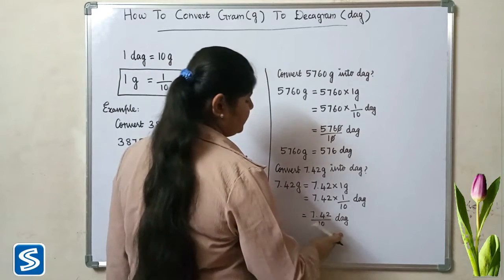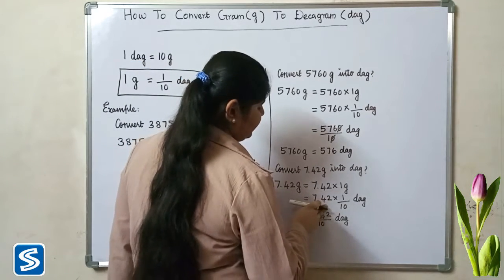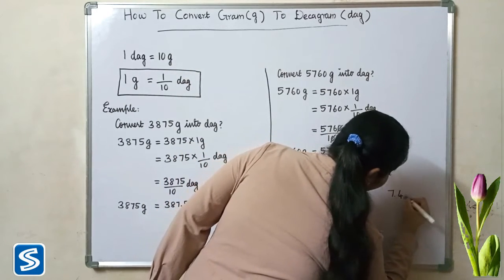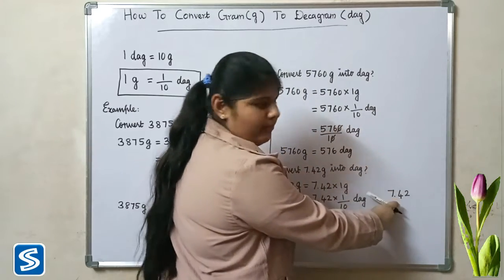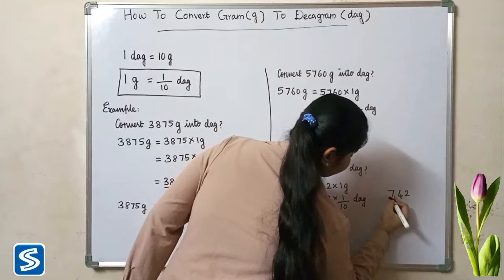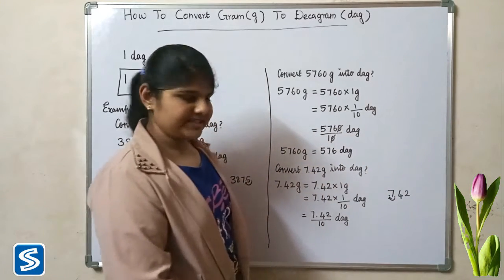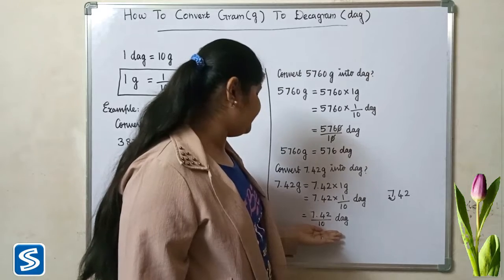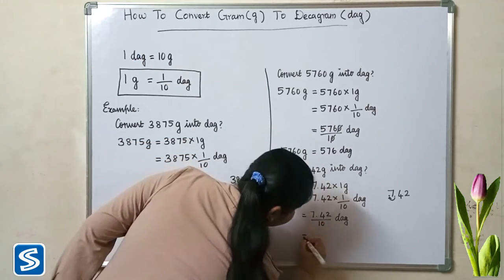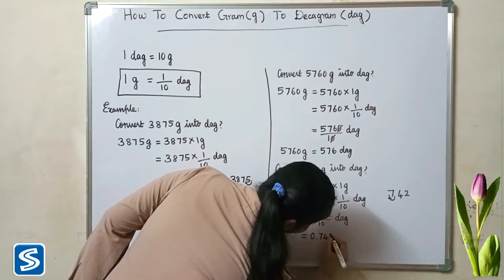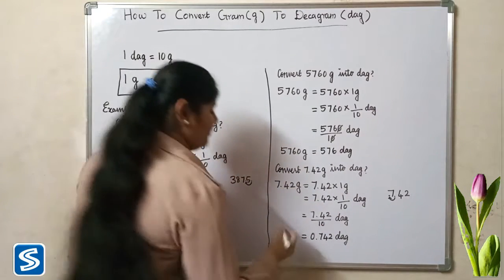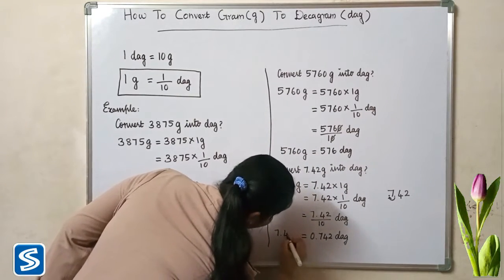The easy way to divide a decimal number by 10 is to move the decimal point one place to the left. So when we divide 7.42 by 10, our answer will be 0.742 decagrams. So 7.42 grams is equal to 0.742 decagrams.